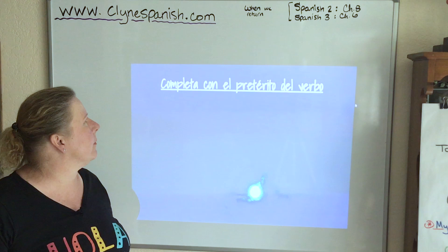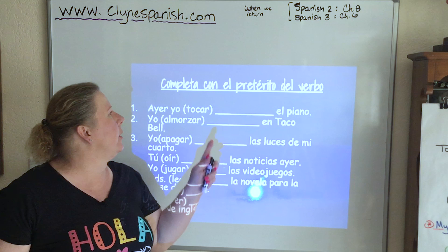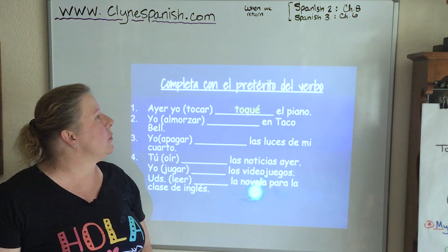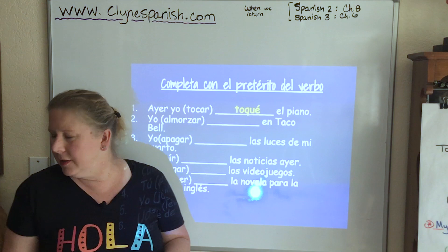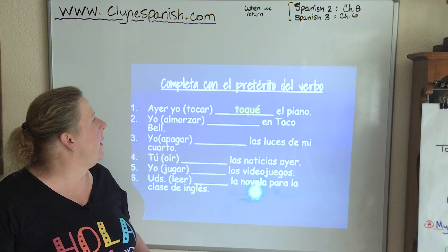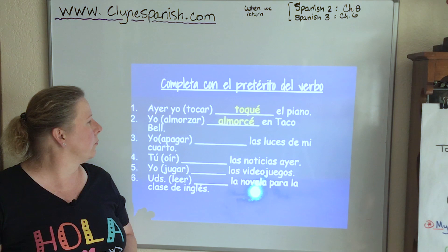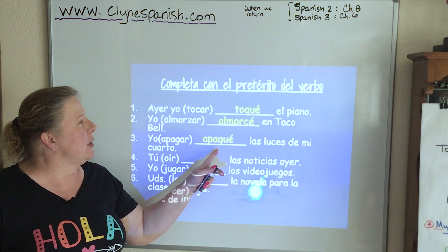Now let's complete some practice checking the irregulars. Yesterday I played the piano — it's a CAR verb, TOCAR. So what's going to happen to that C? TOQUÉ — T-O-Q-U-E — and the yo form with CAR/GAR/ZAR verbs does keep the accent. ALMORZAR — yo ALMORCÉ, your Z changes to a C. Then we have a GAR verb — I turned off the lights in my room: APAGUÉ — A-P-A-G-U-E with an accent. And OÍR — when you take off the last two letters you're left with a vowel and it's an ER or IR verb, so you're dealing with the Karate Chop family. Yo OÍ — I heard the news yesterday.